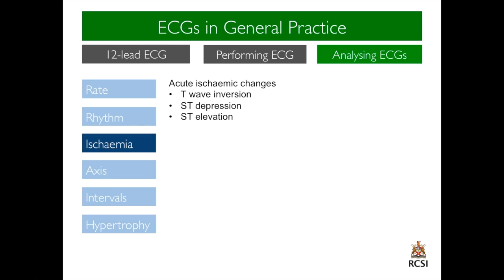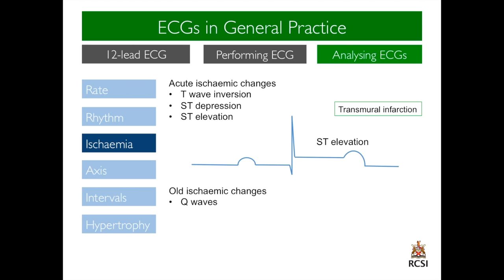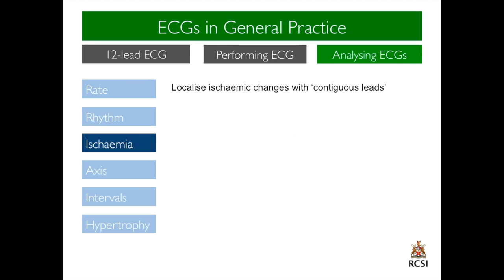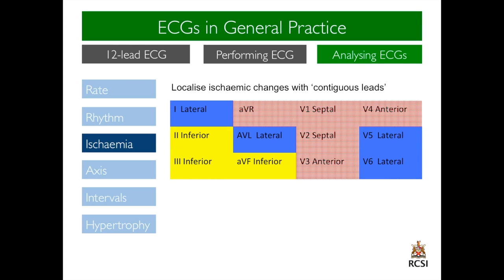Moving on to ischemia. Acute ischemic changes include T-wave inversion, ST-depression or ST-elevation. ST-elevation is important because it represents transmural infarction. An ST-elevation myocardial infarction is treated differently in terms of thrombolysis and intervention. You must also be aware that there may be old ischemic changes on ECGs, such as established Q-waves. With ischemic changes, you must be able to localise the ischemic changes through contiguous leads. There are inferior leads, lateral leads, anterior leads, and septal leads.